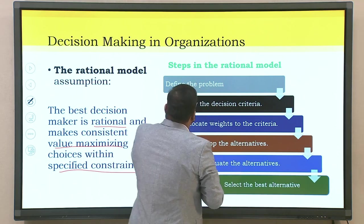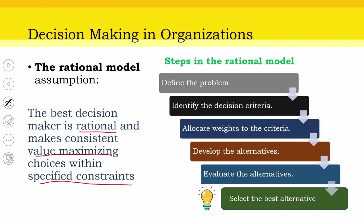Let us see how the rational model works. First, you have to define the problem — noting that problems are sometimes subtle or unclear. Second, identify the decision criteria. A problem could relate to resource constraints, supply chain, marketing channels, human resource constraints, changing international markets, currency values, or crude prices — so problems could be many, but what are the key decision criteria? Third, allocate weights to the criteria. For a multinational with stakeholders in Europe and Australia but fewer in the US, you allocate more weight to Europe and Australia.